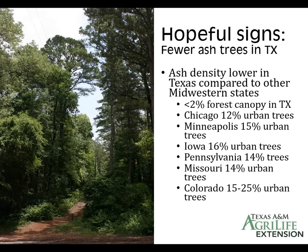There are some hopeful signs for the future. The states where EAB has been most devastating have a much higher percentage of forest canopy devoted to ash than Texas. In Texas, ash density is generally less than 2% of forest canopy in areas where it's fairly common — compared to Chicago at 12%, Minneapolis at 15%, Iowa at 16%. So the impact will likely be less in Texas, and spread may be somewhat slower.